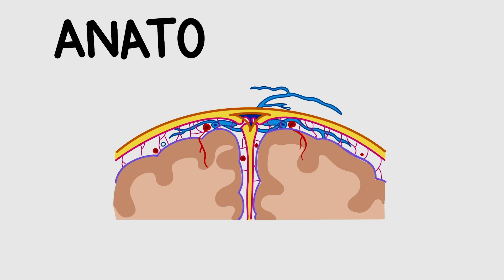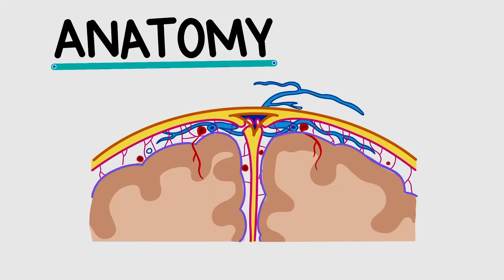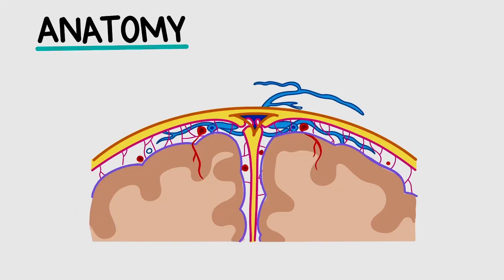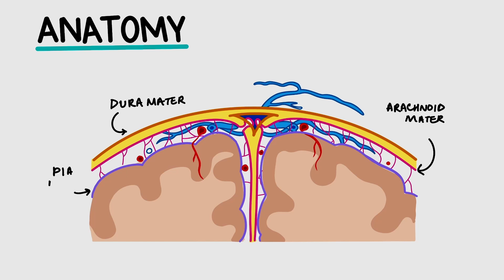Let's have a quick look at the anatomy of the head. Here in this image you can see that there are several different layers. We have the scalp, then the skull and the various layers of the meninges. The first is the dura mater, then the arachnoid mater and the pia mater, closest to the brain tissue.